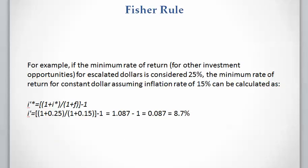Going back to the previous example, the escalated dollar minimum rate of return was 25%. If we want to calculate the minimum rate of return for the constant dollar, we use the Fischer rule. Considering an inflation rate of 15%, we calculate the constant dollar minimum rate of return as 8.6%.